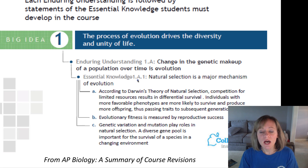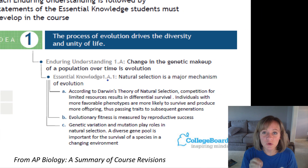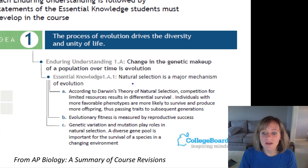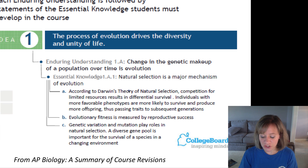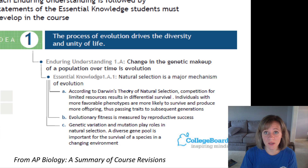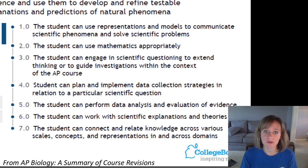Underneath the enduring understandings, we have something called essential knowledge. Essential knowledges are more specific, more detailed, and content specific. So underneath that first enduring understanding is essential knowledge about natural selection, and then there are things underneath that which you have to know. You would be responsible for knowing all of these things about natural selection. This whole framework is posted on the course website, which I'll show you at the end of the video.